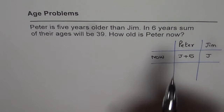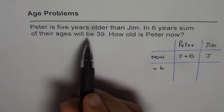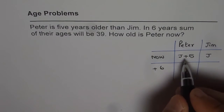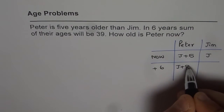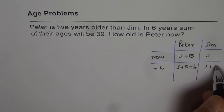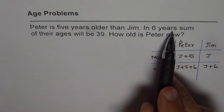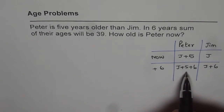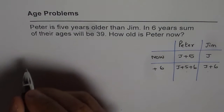It says in 6 years — that means plus 6 years — the sum of their ages will be 39. In 6 years, what happens to their ages? There will be 6 more. So Peter will be J plus 5 plus 6, and Jim will be J plus 6. Both will age. The sum of their ages equals 39.